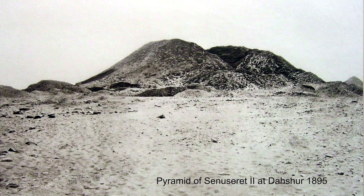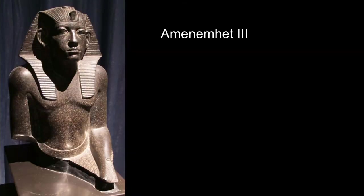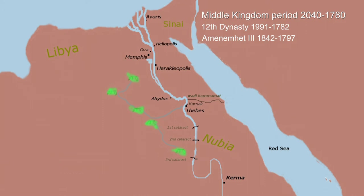The son of Senusret III, Amenemhat III, is also noteworthy for his very solemn and natural-looking statue. He made numerous expeditions into the Sinai where Egypt's famous turquoise mines were located. Those mines were occupied by Semitic people from Canaan who also spoke a language that was a mixture of Egyptian and Canaanite. Around these mines they found some of the oldest alphabet structures related to the Greek and Latin alphabet.